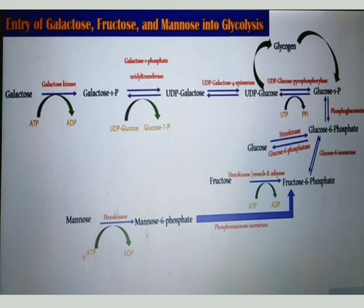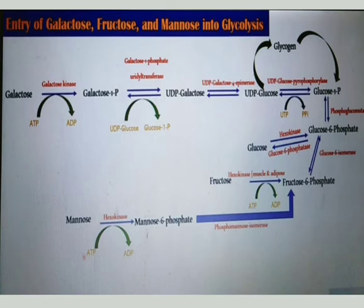If there is a question on the catabolism of galactose, fructose, or mannose — or all three — you have to write the steps showing how they enter the glycolytic pathway and at which step they enter. After that step, write the whole glycolysis pathway to get good grades in the exam. That covers all about the catabolism of other hexoses — fructose, galactose, and mannose — into pyruvate.